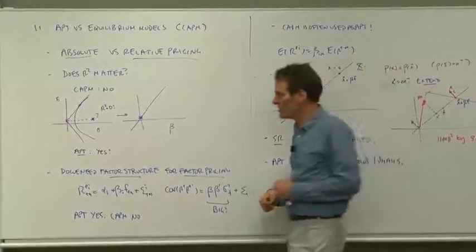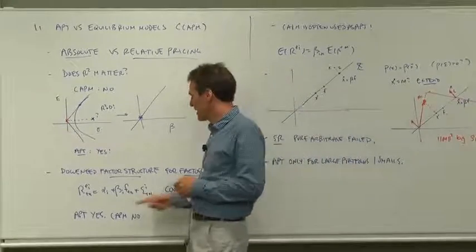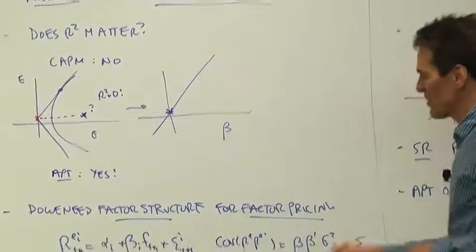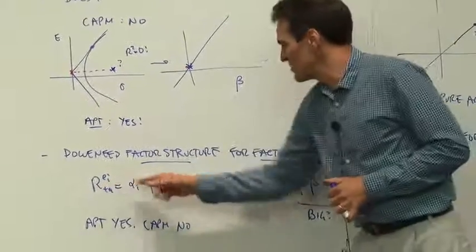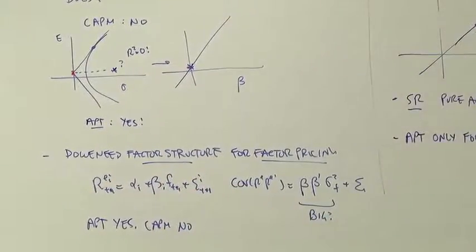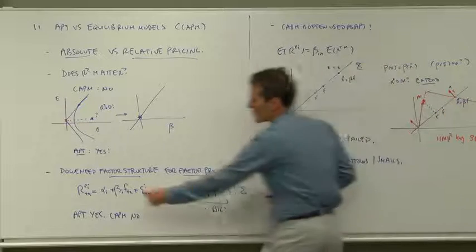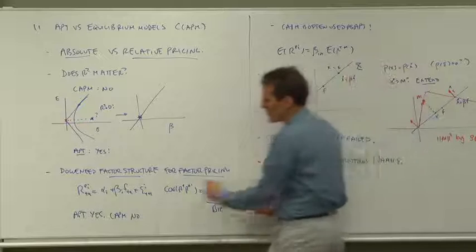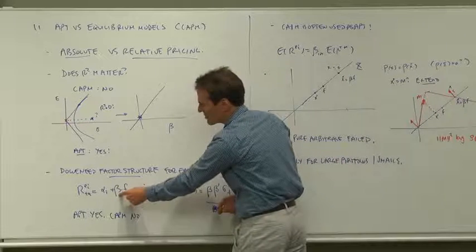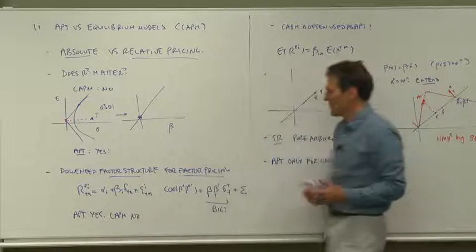Let's look at our time series regression of returns on a factor. Time series regression of returns on a factor implies a factor structure. When I think about the covariance of one return with another return, a component of that covariance is how much their betas load up on the common factor.